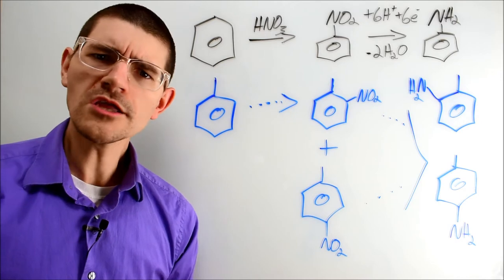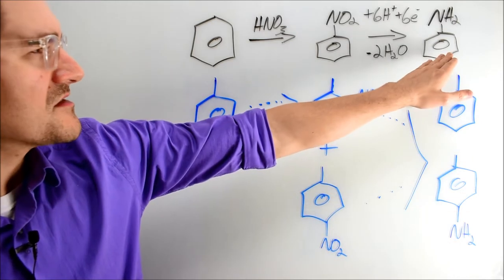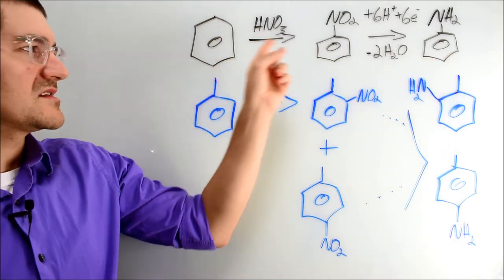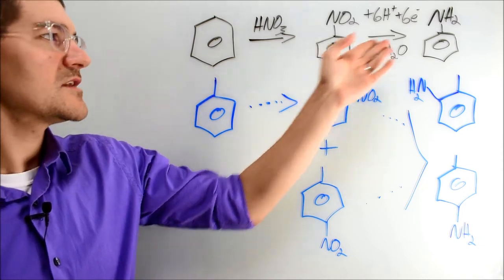But Devin, where does the toluidine impurity come from? Great question. In the synthesis of aniline we typically start with benzene and nitrate to nitrobenzene and then reduce back to the aniline.